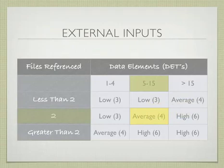In this case, if you had two file types referenced and between five and 15 data elements, it's rated as an average.